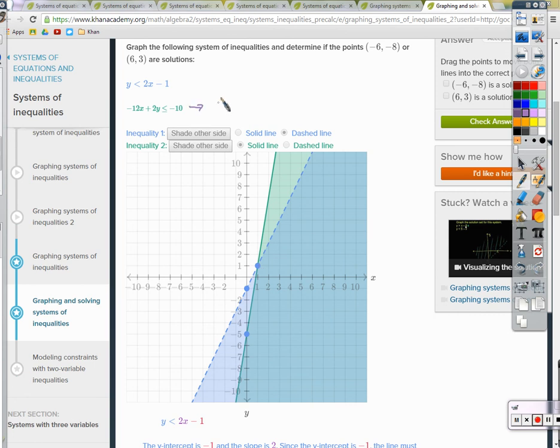This guy here. 2y less than or equal to positive 12x minus 10. And divided by 2, y is still less than or equal to 6x minus 5. So we've got a slope, or a y intercept of negative 5. Slope of 1, 2, 3, 4, 5, 6 and 1. It's a solid line. Shaded below. Good. Okay.